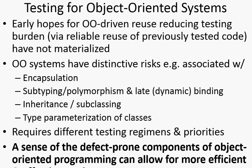What do we mean by polymorphism? It's related to inheritance, and typically the mechanisms we use for inheritance — subclassing — give us polymorphism and subtyping as well. It often goes along with inheritance, but not always so.